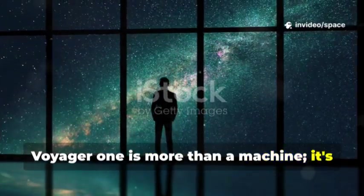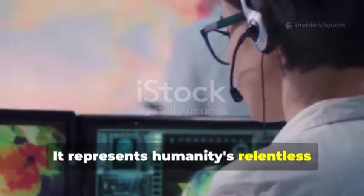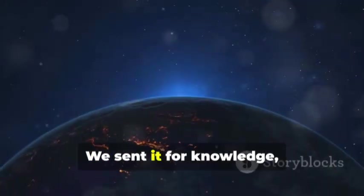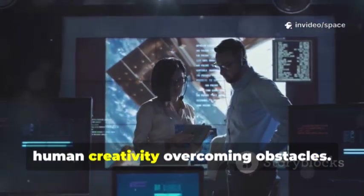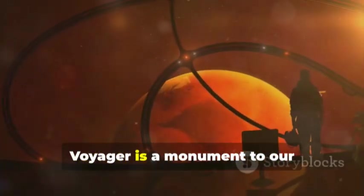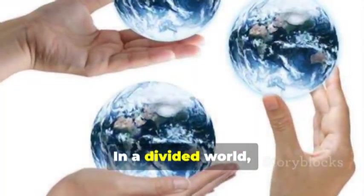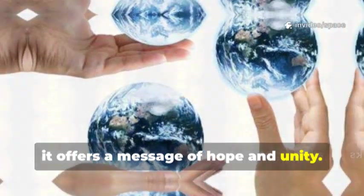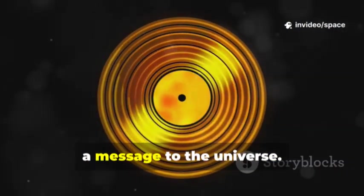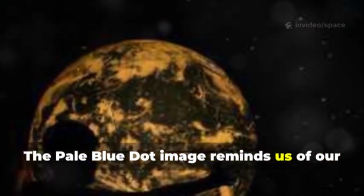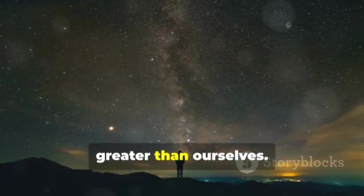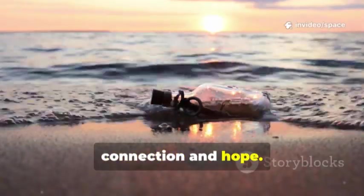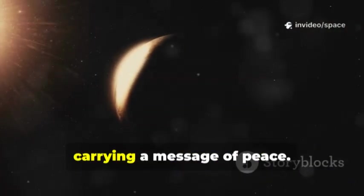Voyager 1 is more than a machine; it's a powerful symbol. It represents humanity's relentless curiosity and need to explore. We sent it for knowledge, to understand our place in the cosmos. The spacecraft stands for our ingenuity and persistence. The 2025 thruster crisis exemplifies human creativity overcoming obstacles. Voyager is a monument to our problem-solving abilities. In a divided world, it offers a message of hope and unity. The golden record represents the entire planet, a message to the universe. The pale blue dot image reminds us of our shared humanity. Voyager's journey encourages us to see beyond differences. It's a symbol of our reach for something greater than ourselves, an expression of our longing for connection and hope. Voyager 1 is our silent ambassador carrying a message of peace.